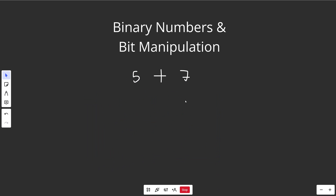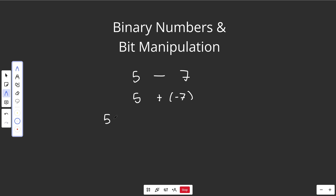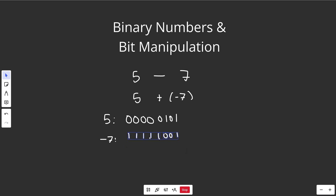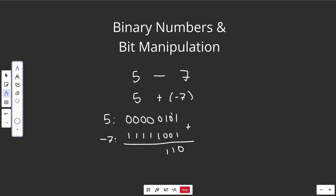Now instead of plus, let's do 5 minus 7. We're still going to use addition, but we convert this to 5 plus minus 7. For minus 7, we need that to be in its 2's complement representation. So 5 stays the same. For negative 7 in 2's complement, write down 7 as 00000111, flip all the digits to get 11111000, then add 1 to get 11111001. That is minus 7 in 2's complement. Now add the two numbers together: you get a result where the lower bits produce 11111110, and this number is now in its 2's complement form.